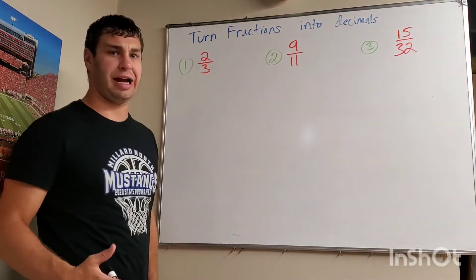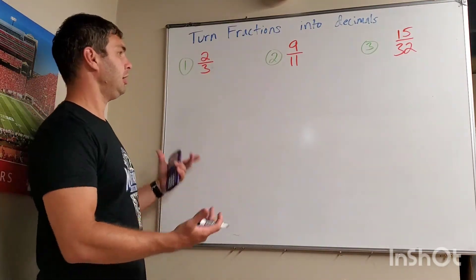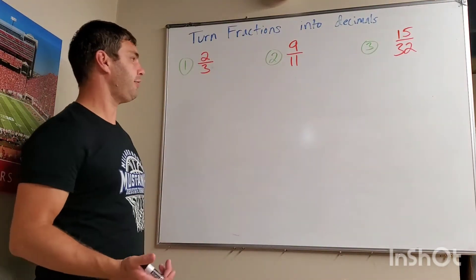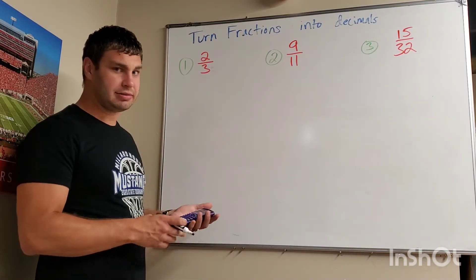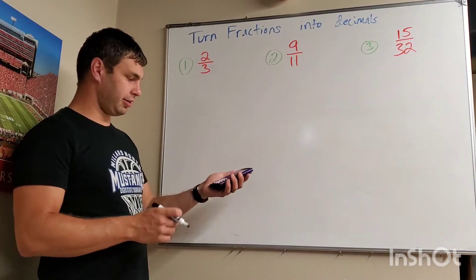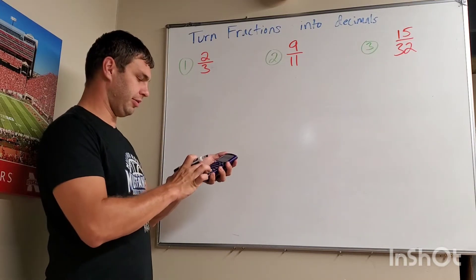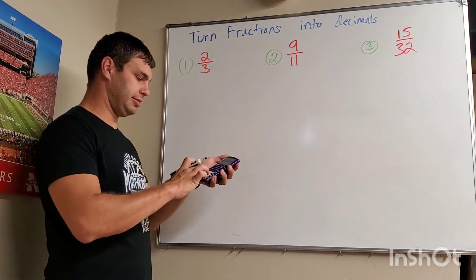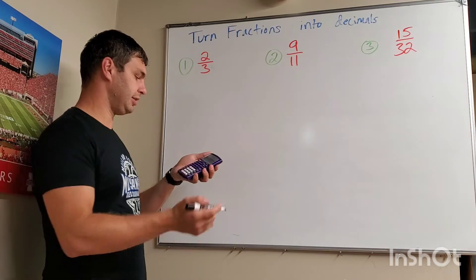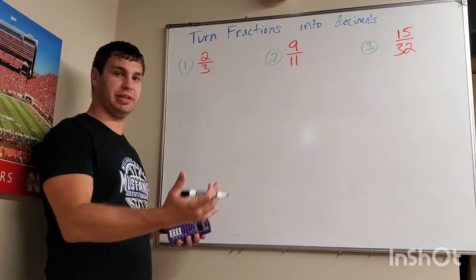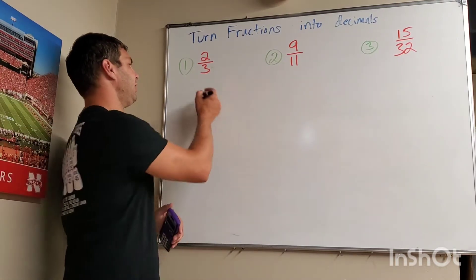I got a question asking how to turn fractions into decimals. I've got a couple fractions up here for you, and obviously the easiest way is to take your calculator and do 2 divided by 3 and hit enter for this first one. It's going to give you 0.6 repeating. If you're not allowed to use calculators, I'll go over that here in a second.